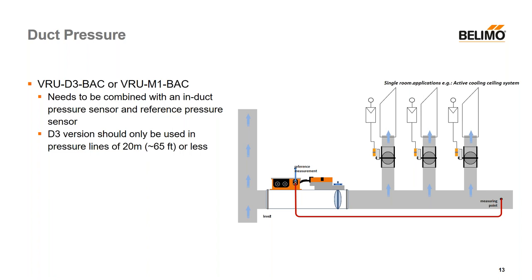A nice thing about duct pressure control is that if you have a corridor with many identical or similar rooms downstream, controlling the pressure of the duct means you don't necessarily have to measure the flow at each terminal unit — you've essentially eliminated the pressure dependency of the system because you know the duct pressure is going to be constant. One last note: if you're doing this with the D3 version, make sure the pressure lines are less than 65 feet, because you could have pressure drops over that distance. For longer runs, we prefer to use the M1.